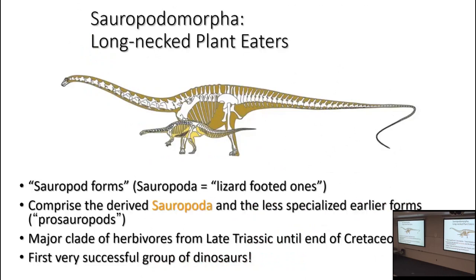The name sauropodomorpha is kind of ugly, but as a clade they're basically the long-necked plant eaters. The name of the group actually points to one of their primary members — sauropoda. Sauropoda, as I'll talk about later in this lecture, is the worst dinosaur name out there.